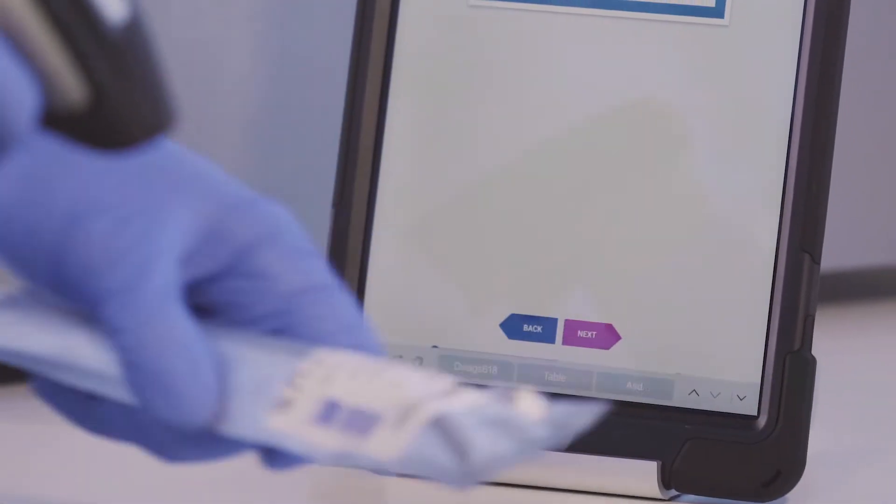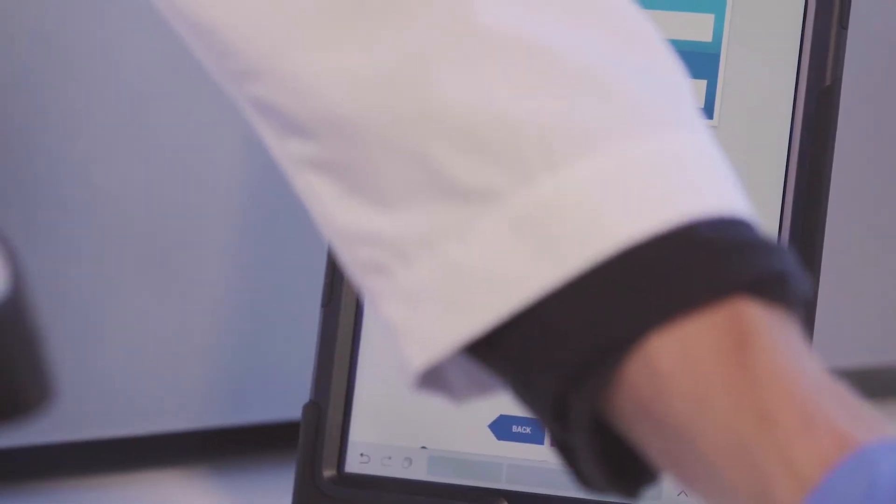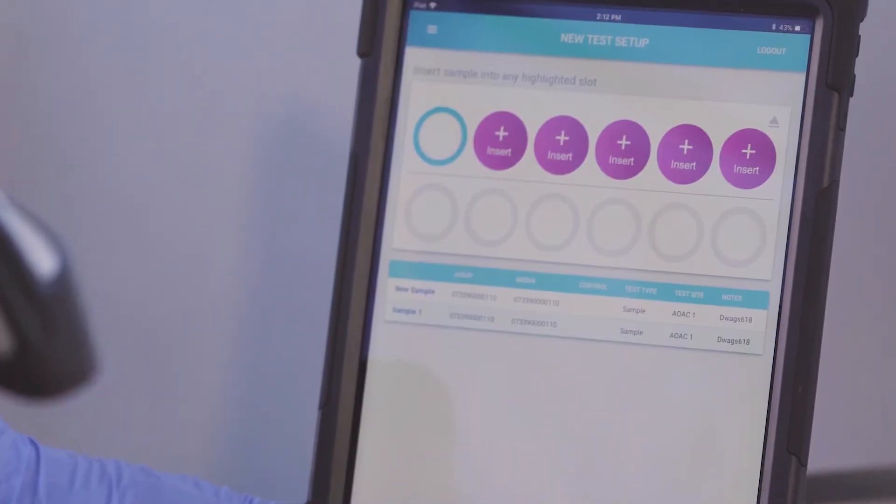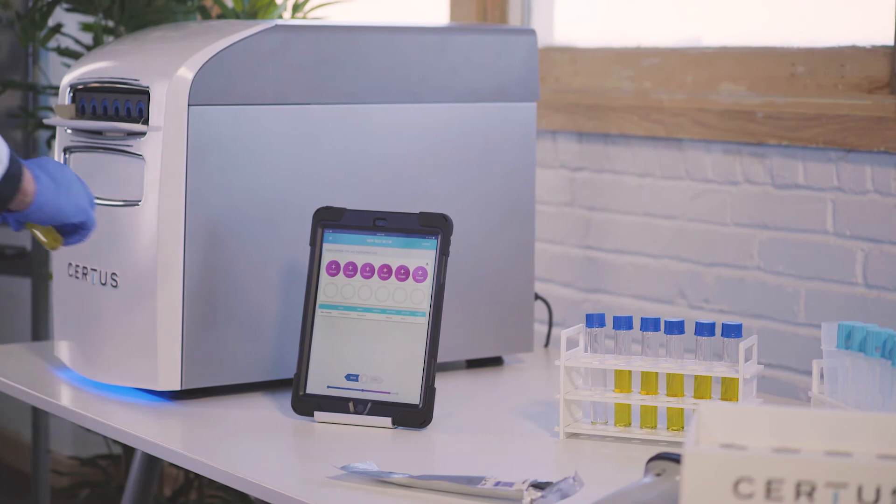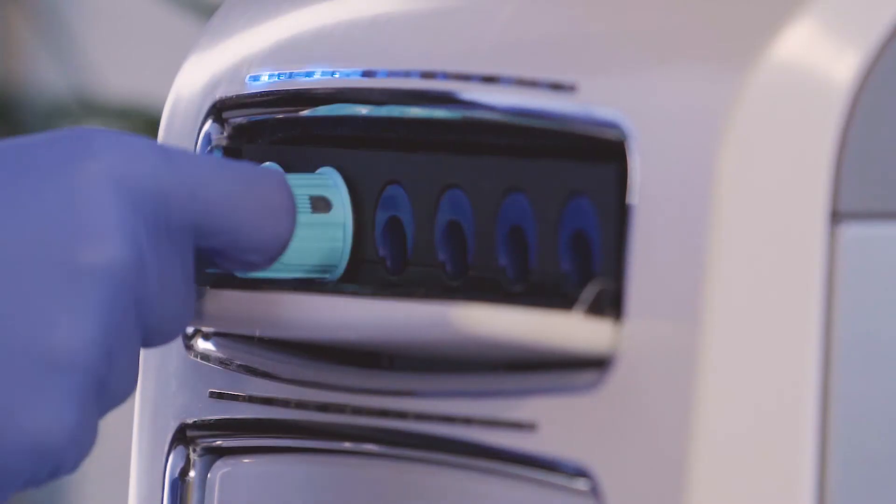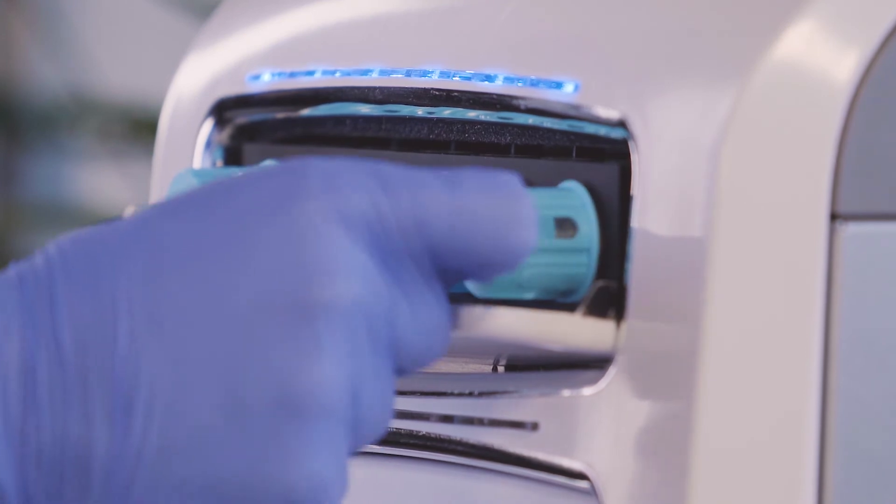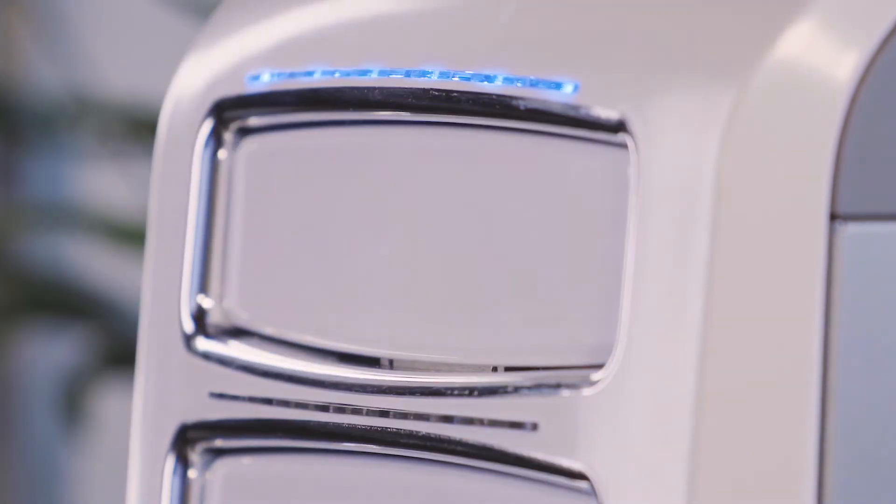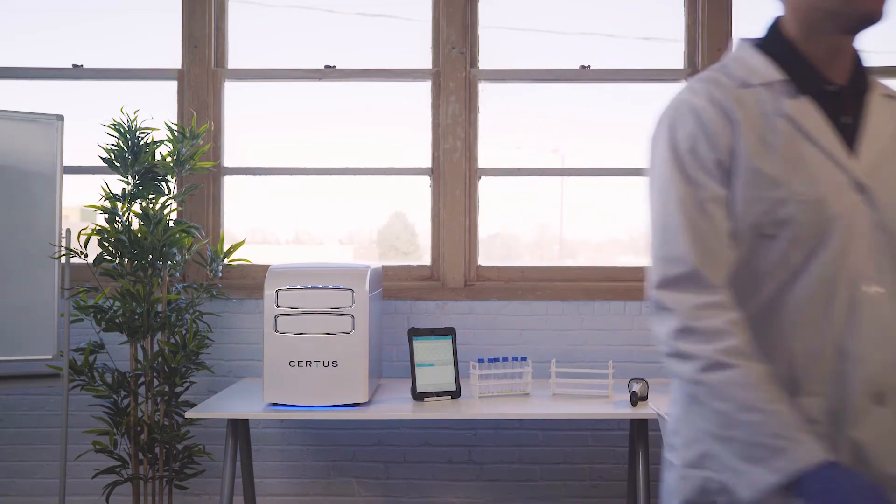When prompted, scan the barcode on the detection tube package or enter the number manually. This enables full quality control traceability for your internal pathogen environmental monitoring program. Insert the tube into the detection unit using any of the available tube slots as indicated on your control pad. The SIRTIS system can test up to 12 samples at a time.